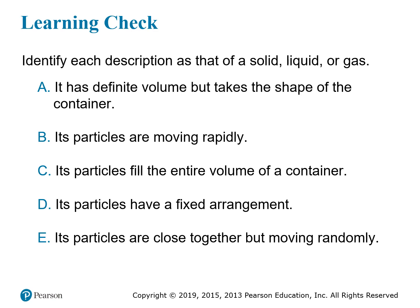The more energy the particles have, the faster they move and the further apart they'll go, becoming like a gas. C says its particles fill the entire volume of a container — also characteristic of a gas, since particles with enough energy fly apart and bounce all over the container. D says its particles have a fixed arrangement, which is descriptive of a solid. E says its particles are close together but moving randomly — obviously a liquid. Close together means solid or liquid, but since they're moving randomly relative to one another, they're not in a fixed position, so it must be a liquid.